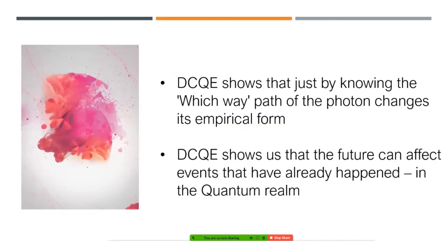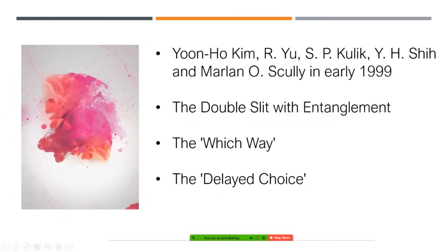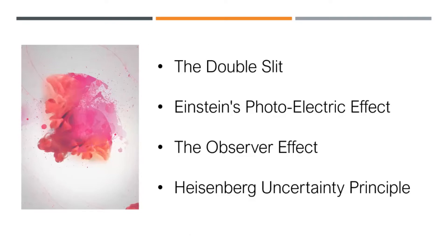Secondly, it shows us that future events can affect events that have already happened, at least in the quantum realm. The experiment was done in 1999 by Kim, Yoo, Koenig, Shi, and Scully. You can think of it as the double slit with entanglement. The two key concepts are the 'which way' — which slit does the photon travel through — and the 'delayed choice,' because the hitting of the back screen is delayed as the photon goes through mirrors and beam splitters.